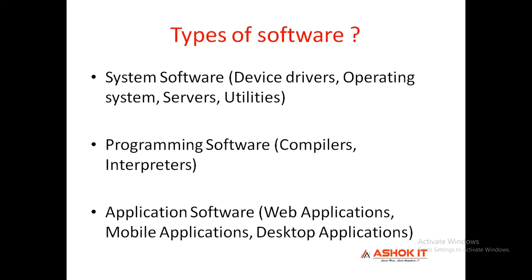System software examples include device drivers, operating systems, servers, and utilities — all come under system software. Coming to programming software, if you build any program using any language, we need to compile or interpret those programs. So compilers and interpreters are the programming software used to run any kind of platform programs.